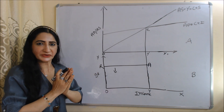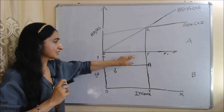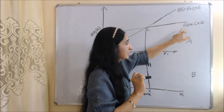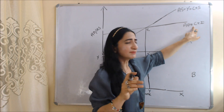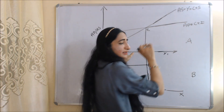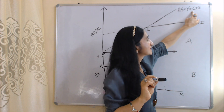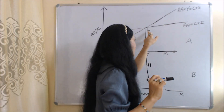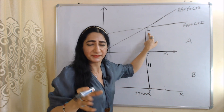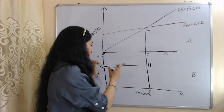Now we will derive the IS curve. We have two diagrams A and B, both connected with each other. In diagram A, the x-axis has income and the y-axis has aggregate demand and aggregate supply. The AD curve represents aggregate demand, equal to C plus I, where C means consumption expenditure and I means investment expenditure. The AS curve represents aggregate supply, which equals income Y, and income equals C plus S, where S means saving. E is the initial equilibrium point where aggregate demand equals aggregate supply, meaning the goods market is in equilibrium, and saving equals investment.